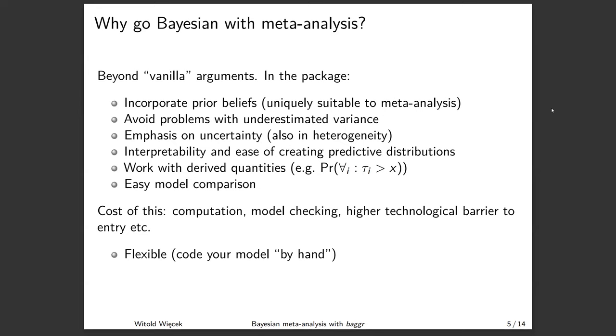In general, Bayesian models allow us to create predictive distributions. So the distributions that tell us what would happen in another study that wasn't observed much more easily than other methods. And in general, they allow us to create any kind of derived quantity and describe them probabilistically. So for example, what is the probability that out of every study in the meta-analysis, each of them had the true effect greater than X?